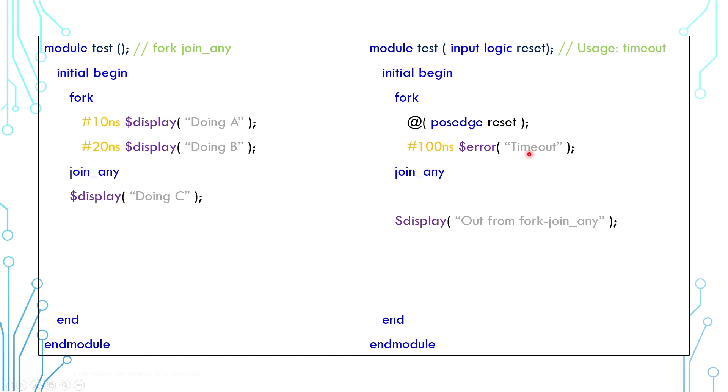One common use case of fork join_any construct is timeout mechanism. The example here is waiting for a reset or timeout when 100 nanoseconds hits. Let's say reset comes first. The code will move on from the fork join_any construct. The problem is that the timeout thread is still ongoing. To stop the timeout, we can put a disable fork statement here.